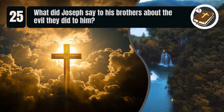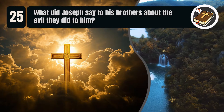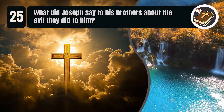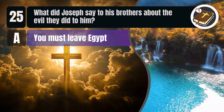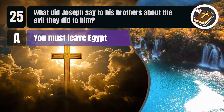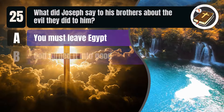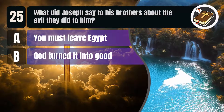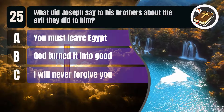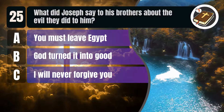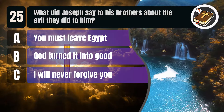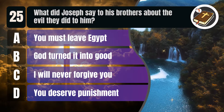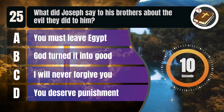Question 25. What did Joseph say to his brothers about the evil they did to him? A. You must leave Egypt. B. God turned it into good. C. I will never forgive you. D. You deserve punishment.